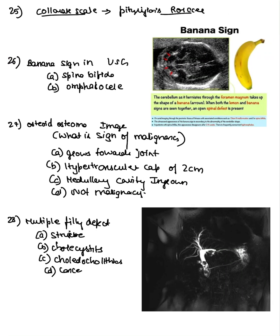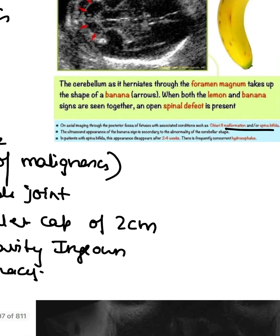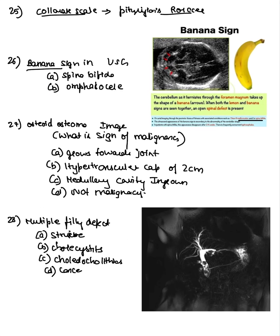Then they asked about collarette scale, which is seen in pityriasis rosea — associated with HHV-6 and HHV-7. Then the banana sign on ultrasound was asked — this is seen in defects like Chiari malformation or spina bifida.